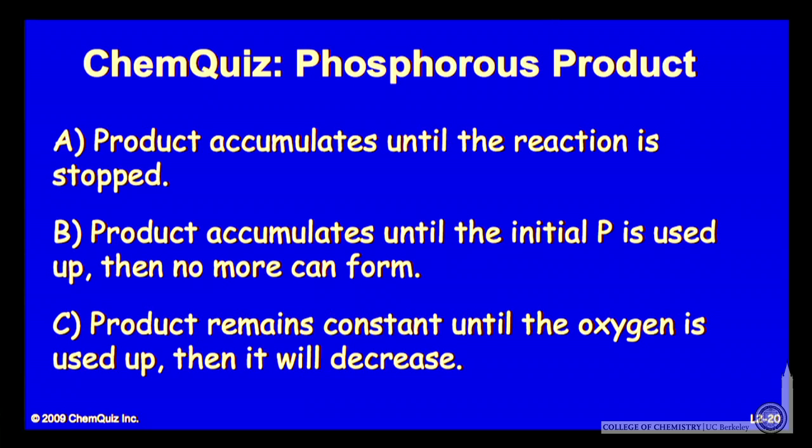Let's consider a possible argument for all three answers. A, the graph looks like the product accumulates until the reaction is physically stopped. B, the product accumulates until the initial phosphorus is used and then no more can form. Or C, the product remains constant until the oxygen is used up, then decreases. Think about those three alternatives and make another selection.